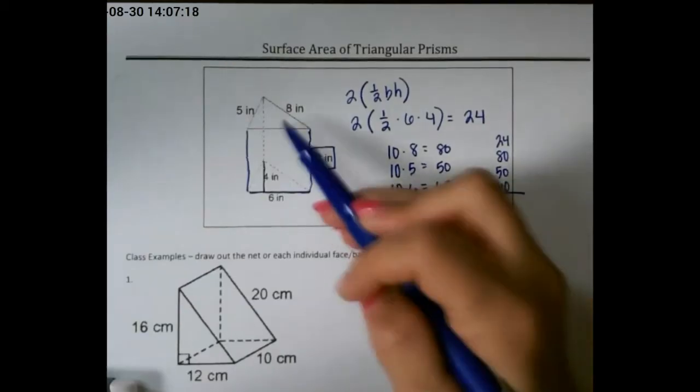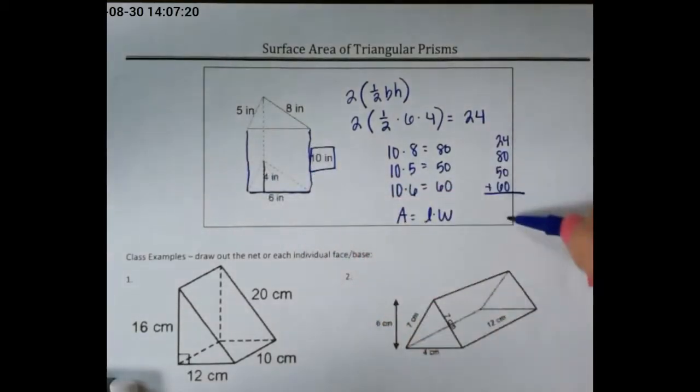Once you've found the area of each face of our shape, we want to add all of those up, which will give me 214 inches squared.